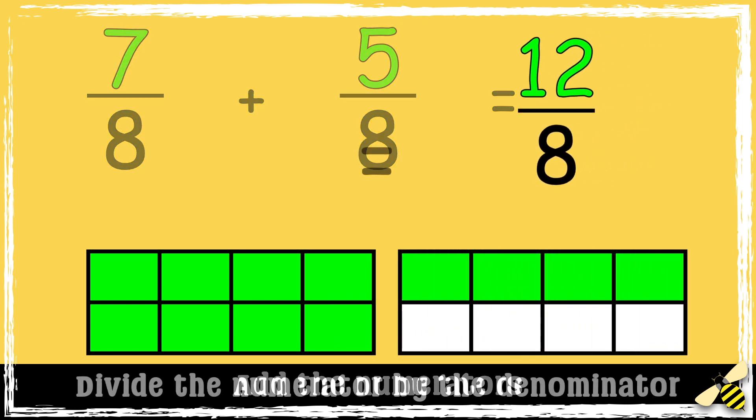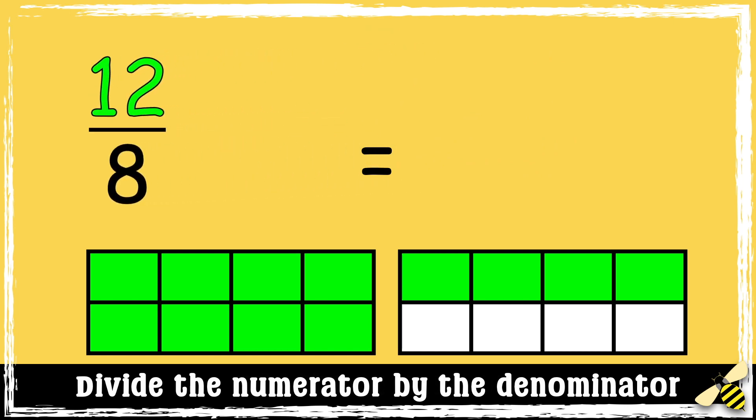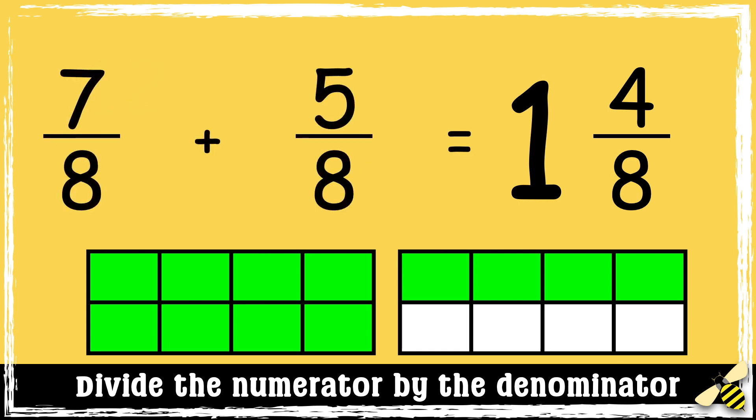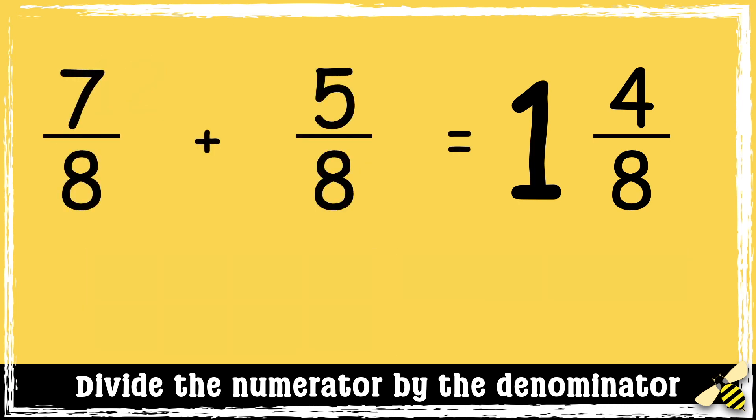We now have an improper fraction, so we need to convert it to a mixed number. So we have 1 whole and 4 eighths left over. So the answer is 1 and 4 eighths.